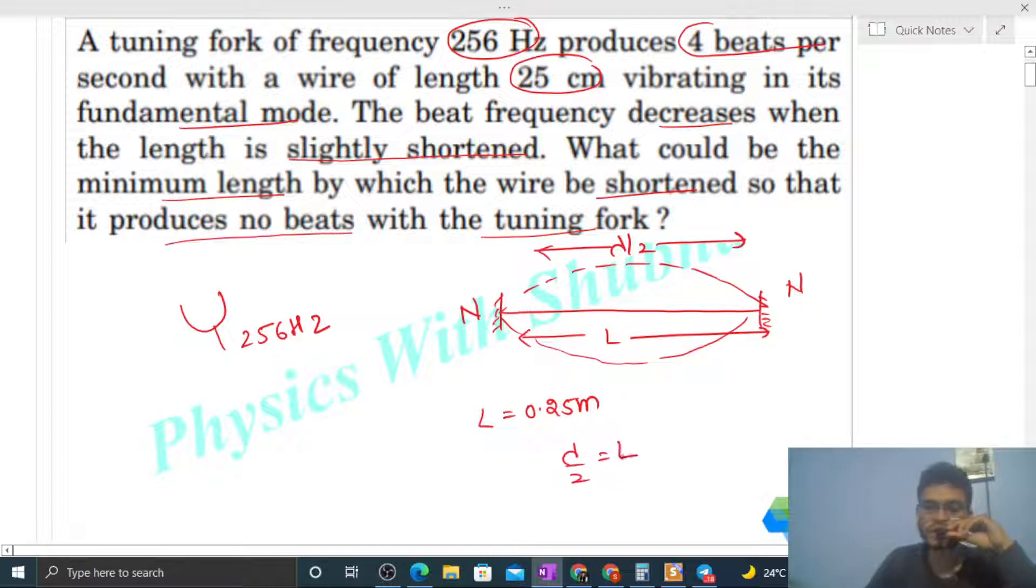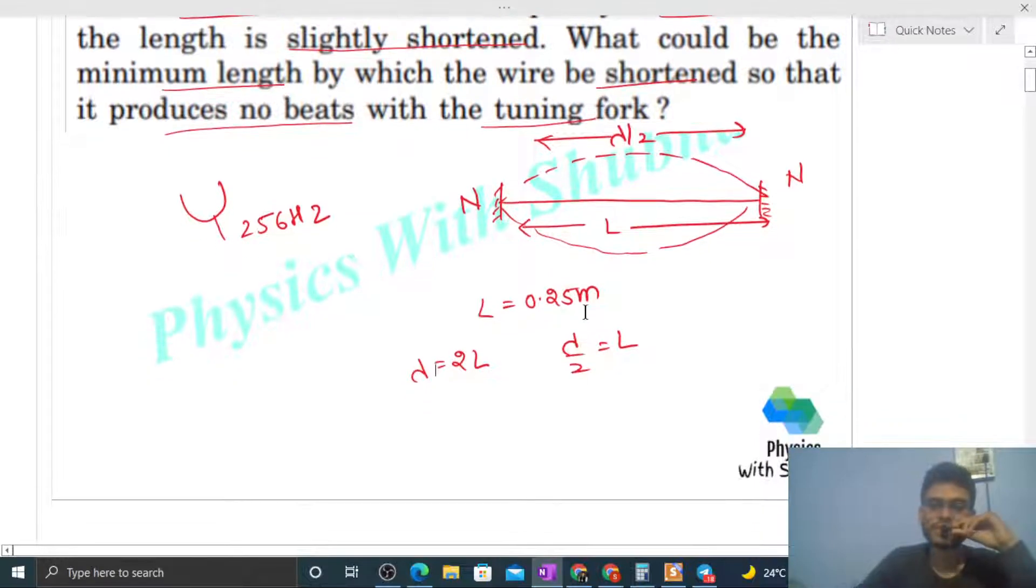So lambda by 2 will be the length of this wire. It means wavelength will be 2L, and frequency is simply speed divided by wavelength, which is 2L. Speed you can write as the square root of tension divided by linear mass density.